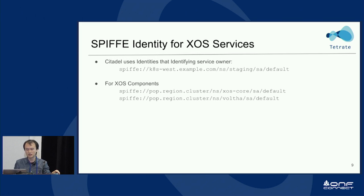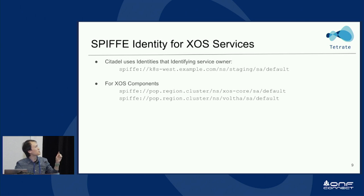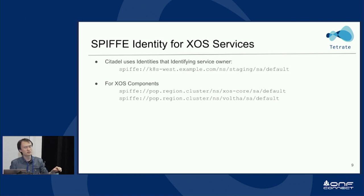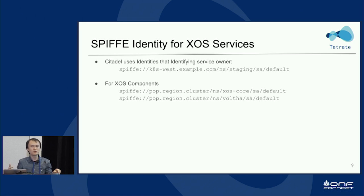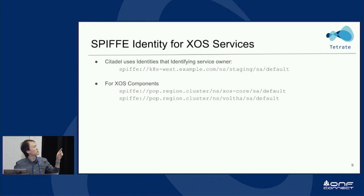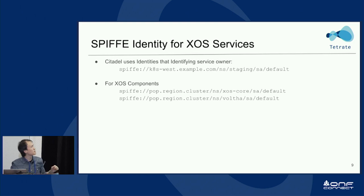Here's how we can use a SPIFFE identity for XOS services. Citadel will use the identity that identifies the service owner — meaning who deployed the service — which is the service account model. For XOS, if you deploy the XOS core in Kubernetes, it comes with a Kubernetes service account. The SPIFFE identity maps to each service account, so if you have XOS core deployed in the XOS namespace, the identities map to each service account there.